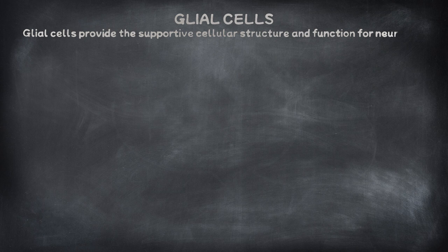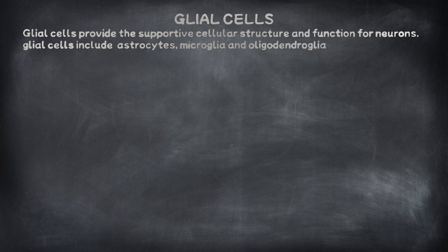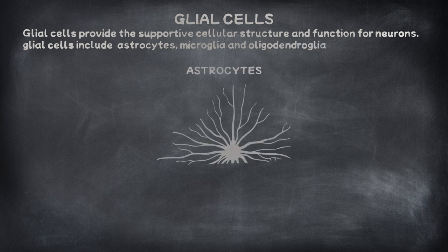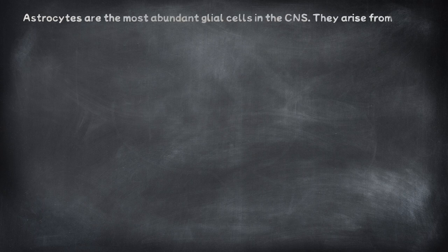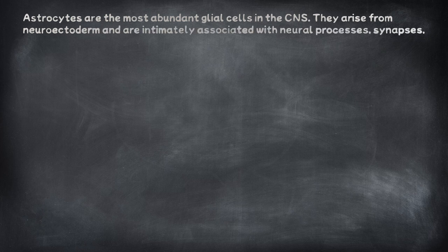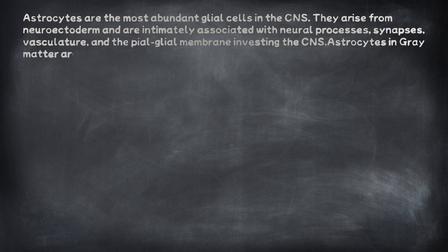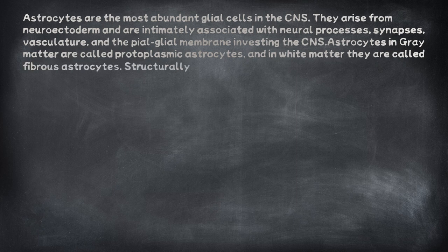Glial cells provide the supportive cellular structure and function for neurons. Glial cells include astrocytes, microglia, and oligodendroglia. Astrocytes are the most abundant glial cells in the CNS. They arise from neuroectoderm and are intimately associated with neural processes, synapses, vasculature, and the pial glial membrane investing the CNS. Astrocytes in grey matter are called protoplasmic astrocytes, and in white matter they are called fibrous astrocytes. Structurally, astrocytic processes interdigitate, forming a syncytium to protect synapses.